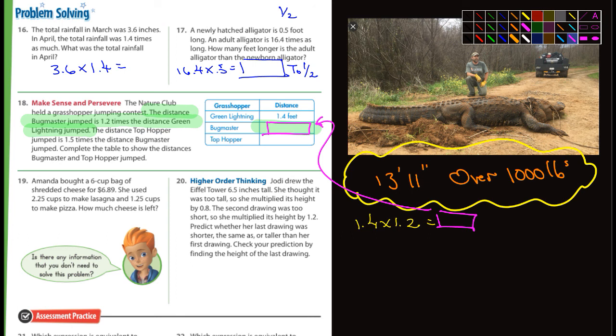And then it says the distance Top Hopper jumped is 1.5 times the distance of Bugmaster. Okay. So then your answer, gosh I hope it's correct, times 1.5 equals, and I'll do this one in green, the Top Hopper. Man, confusing. They don't make these easy. Convoluted. That means it doesn't make a whole lot of sense sometimes.